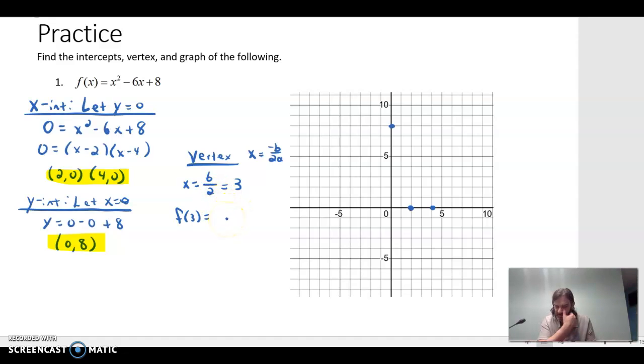So we're going to plug 3 in to get our y. That will give me 3 squared which is 9 minus 6 times 3 which is 18 plus 8. So that gives me negative 1. My vertex point is 3, negative 1. I'll come over here to the graph and put that on.